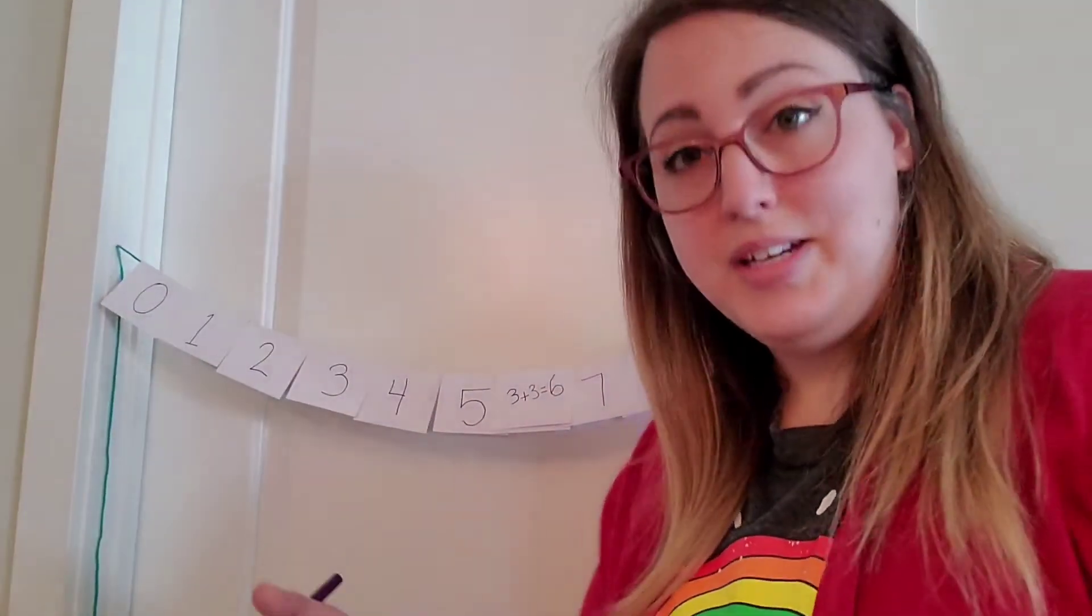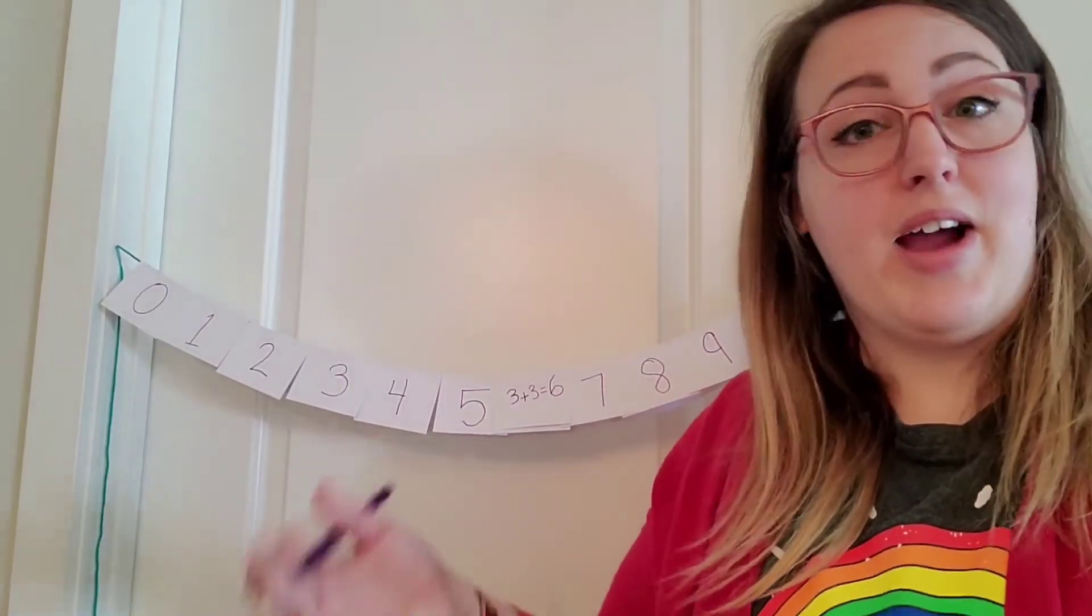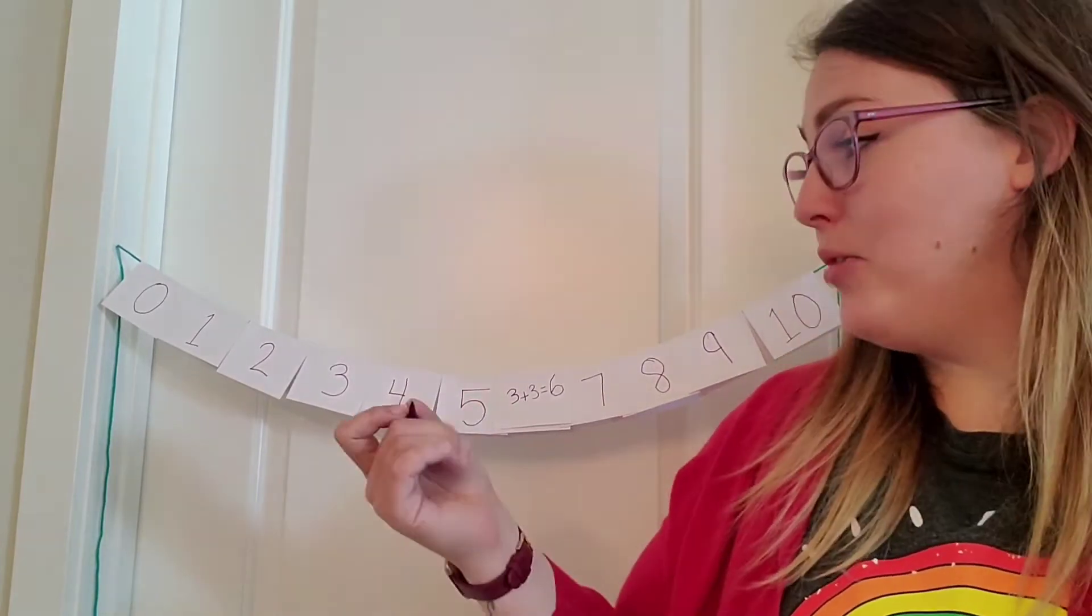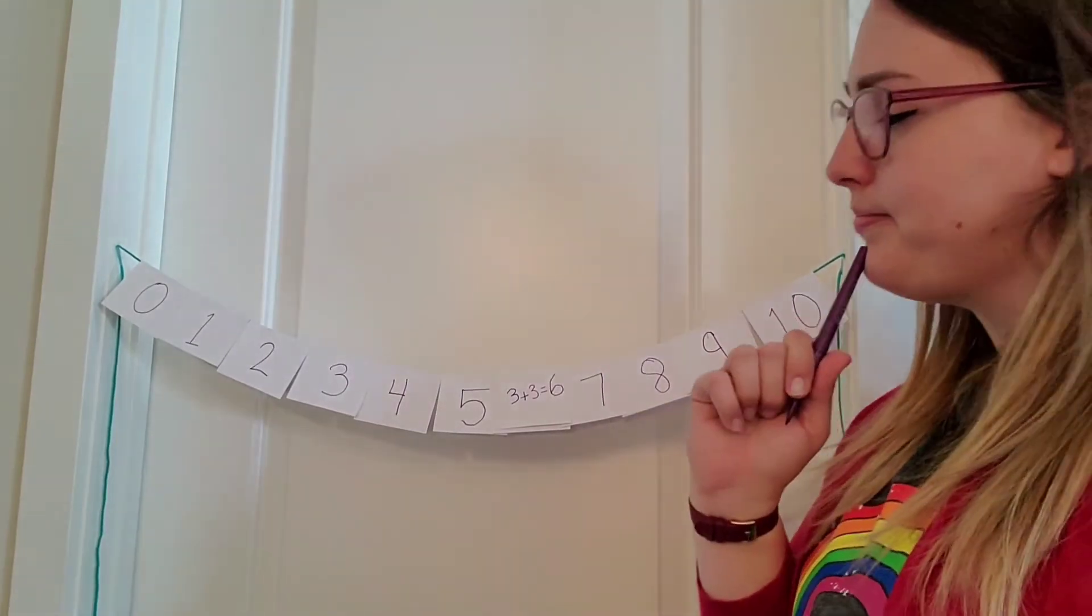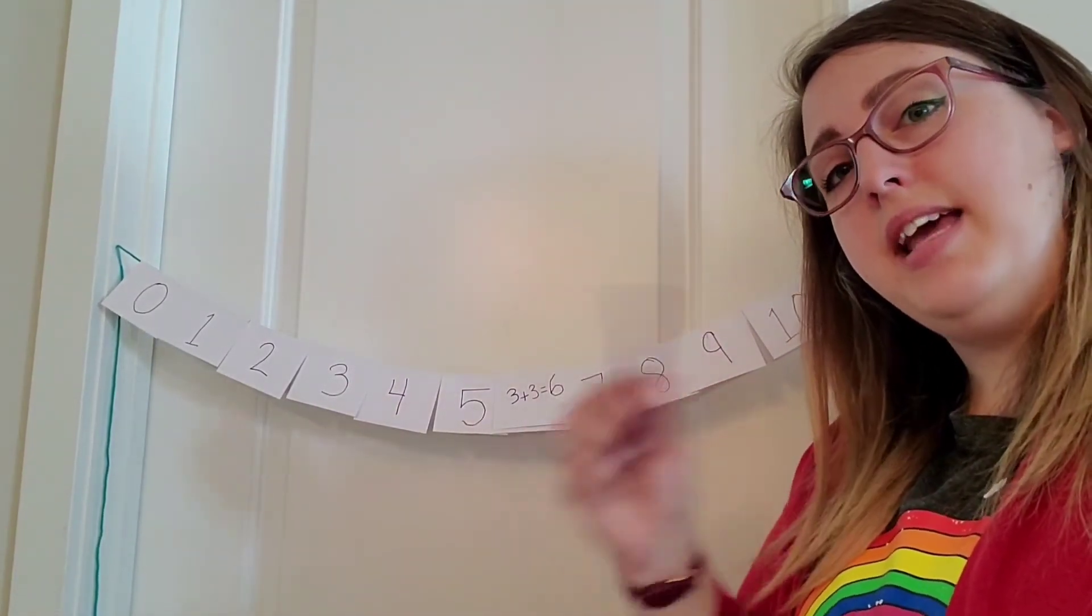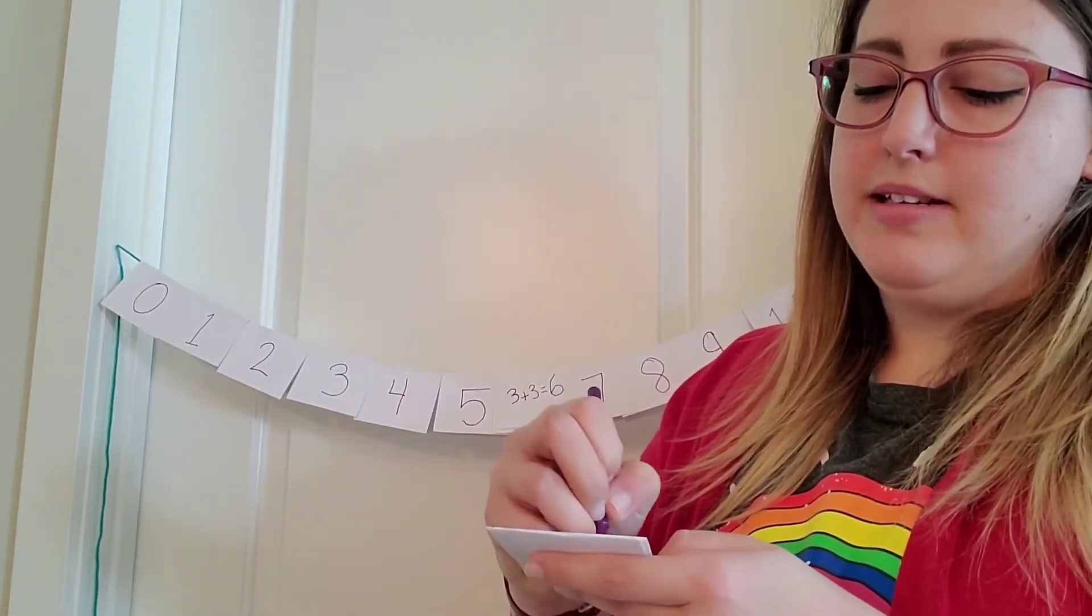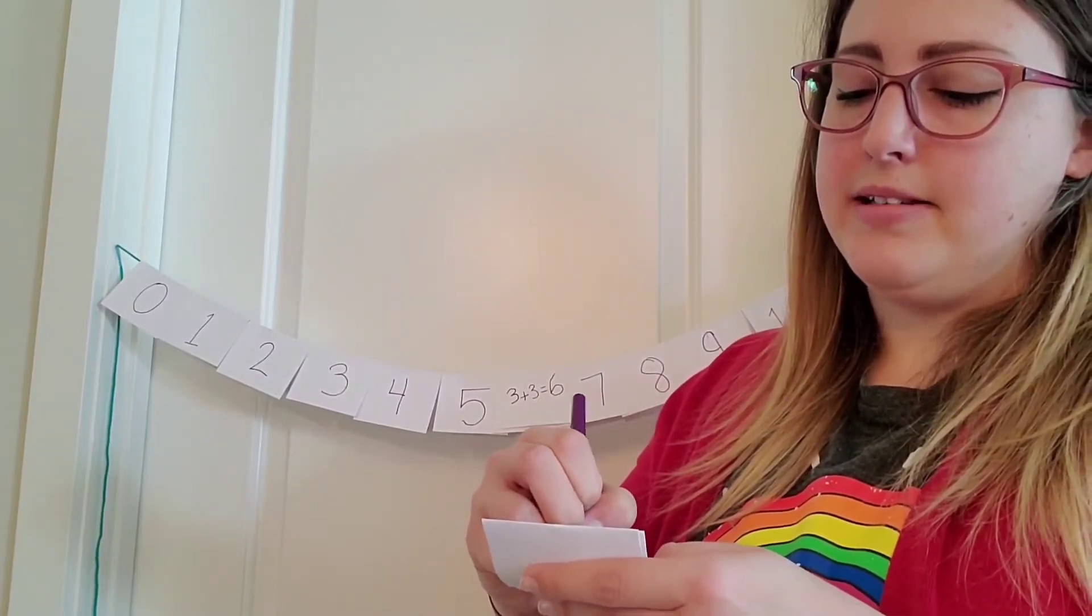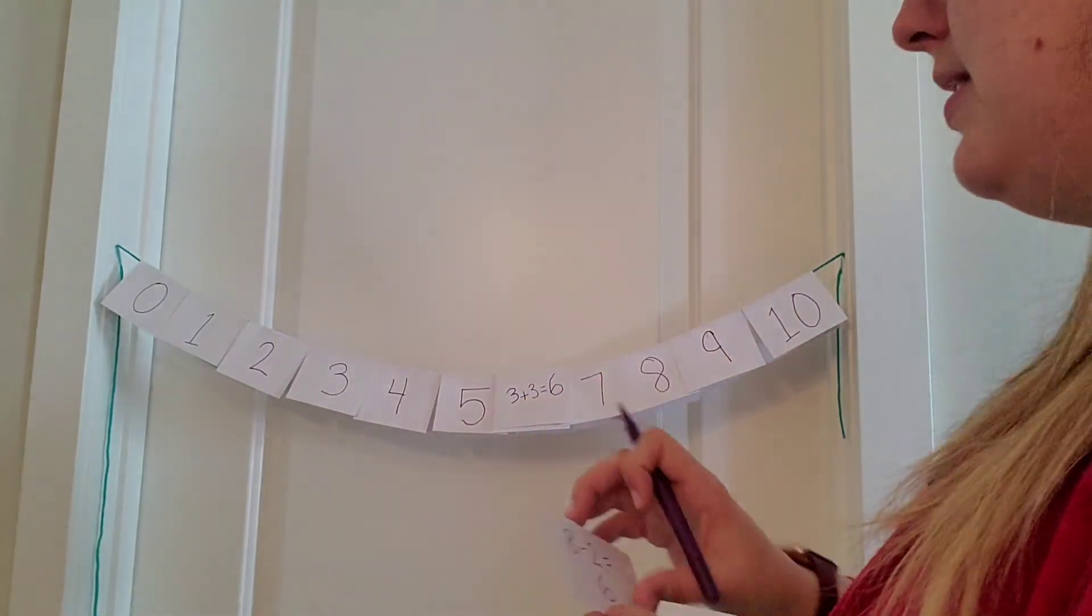Now I can keep working with 6 and I can come up with a subtracting question for it or another adding question for it, or I can try a new number. I'm going to do 6 one more time, except I think I want to do a subtracting question. I know that 8 take away 2 is 6, so that's the question I'm going to do. 8 take away 2 is 6. Here we go. And I'm going to add it to my 6.